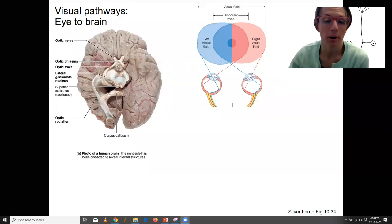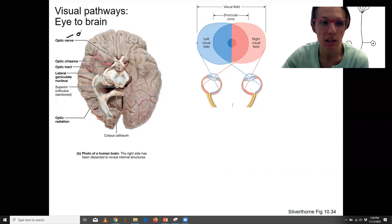Believe it or not, you already know a lot about the pathway that goes from the eye to the brain. So the optic nerve, what is that? That's the axons of our ganglion cells. Those are receiving information from the bipolar cells, which are receiving information from the photoreceptors that transduce that light.